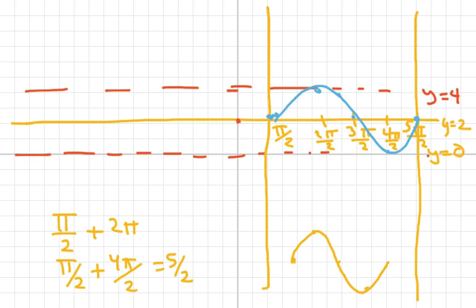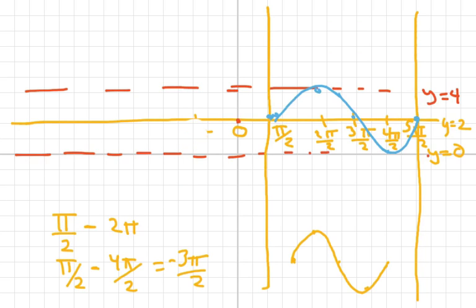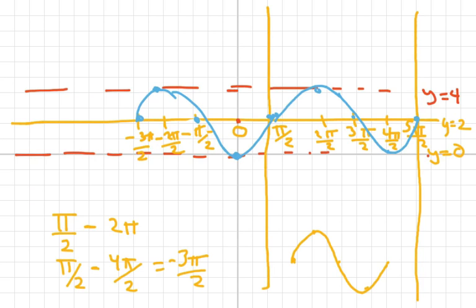Now to get my second cycle I'm going to go backwards — I'll subtract two pi. When I subtract those, I get negative three pi over two. So I go backwards to negative three pi over two, this would be zero, negative two pi over two, and negative three pi over two. Then I draw the characteristic curve — going down here, back up, up to my little boxy area and back down. And there's your two cycles of the sine wave, labeled and everything.